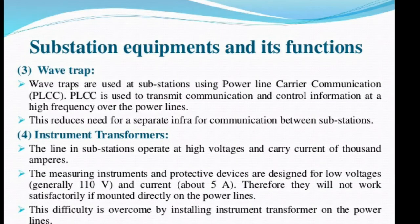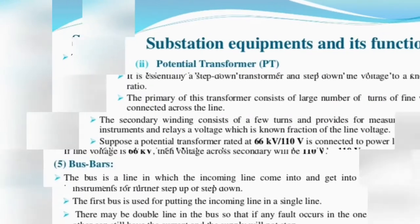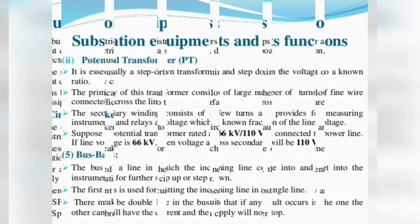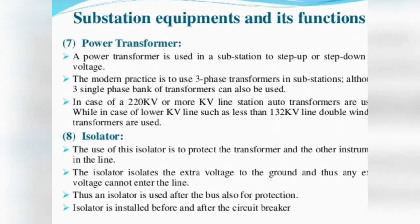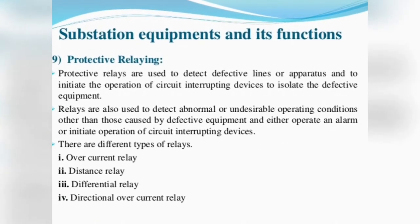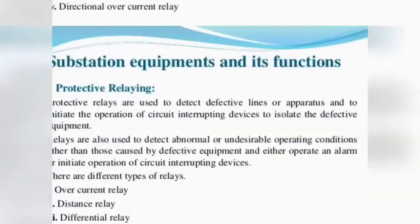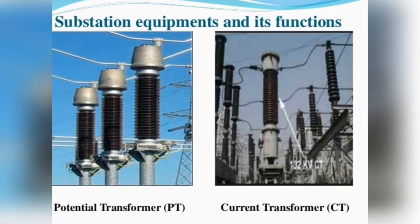Instrument transformers — CT and PT — are called instrument transformers. Similarly, many other equipment are connected in substations: current transformers, potential transformers (CT and PT), bus bars, circuit breakers, lightning arrestors, isolators, power transformers, various protective relays, over-current relays, and DC battery chargers — all these are substation equipment.